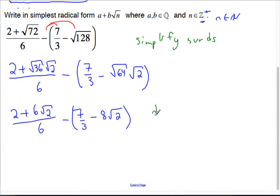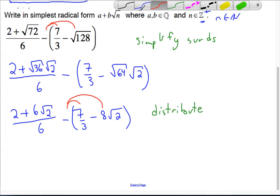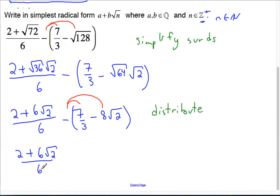At this point, let's distribute. This negative will make this negative and change this to positive. So now I have a numerator which is quite long: 2 plus 6 root 2 divided by 6, subtract 7 over 3, then this becomes a plus 8 root 2.